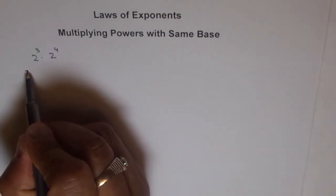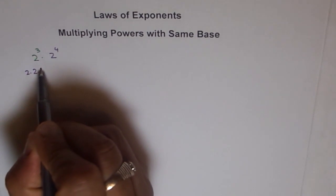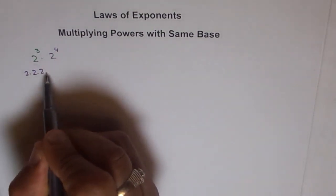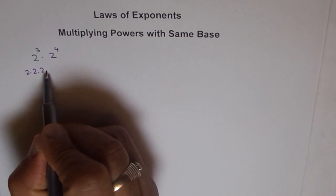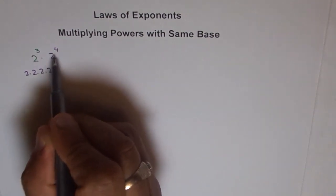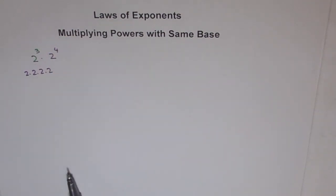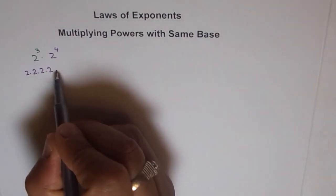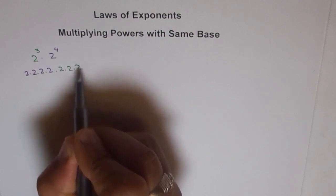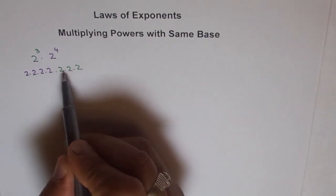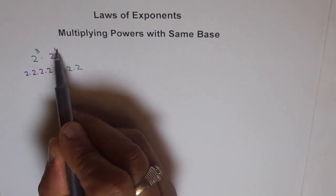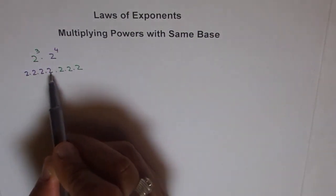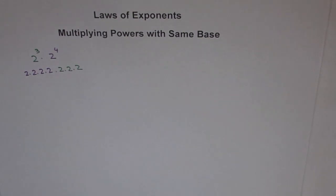Two to the power of three means we have two times two times two — that's three twos. And two to the power of four gives us four twos. So in all, how many twos do we have? We have four plus three, which is seven twos.